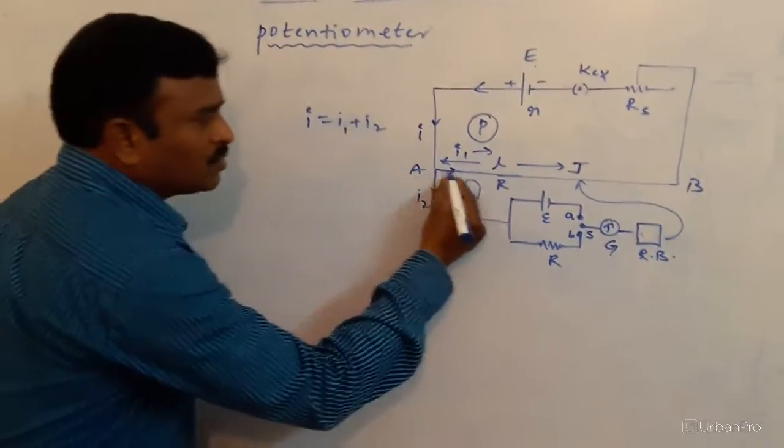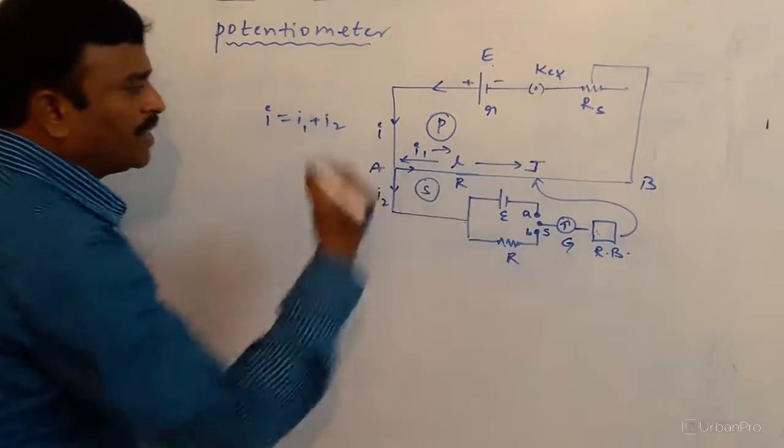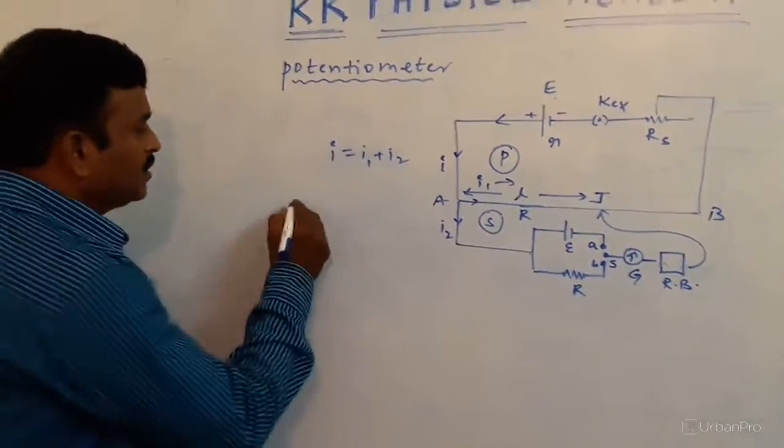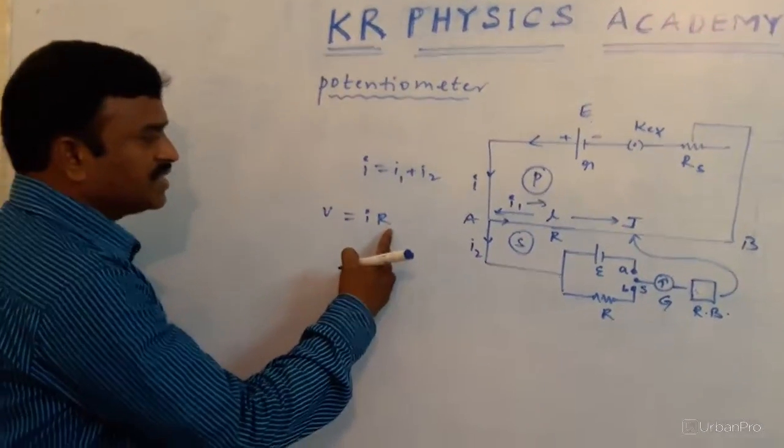Now, as current is passing through the wire, some potential drop takes place in the wire. Because potential V is equal to, according to Ohm's law, IR, where I is the current and R is the resistance.